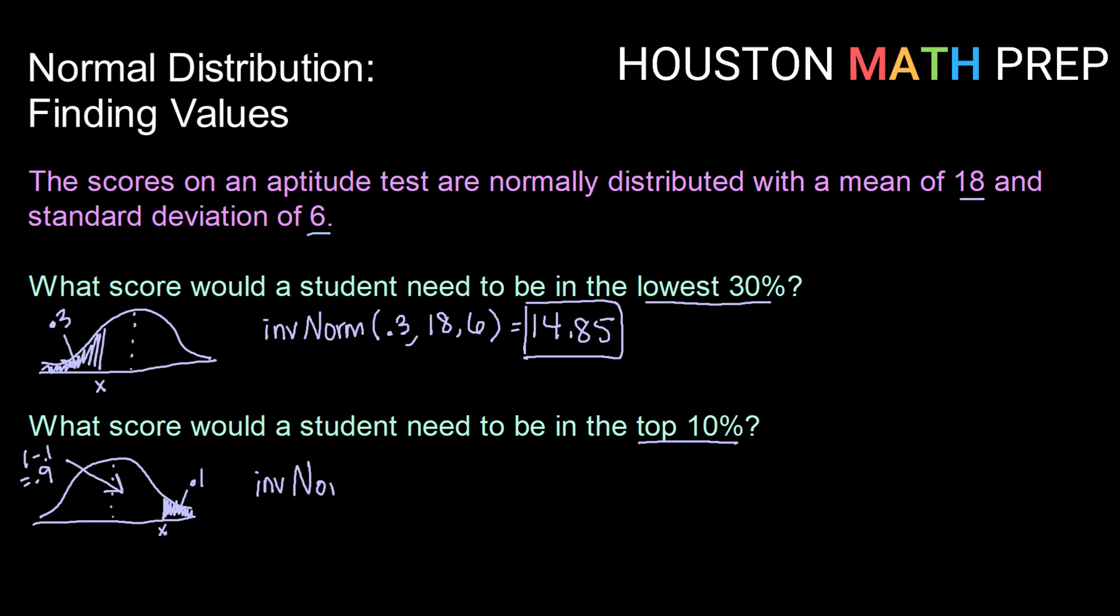So going in and grabbing our distribution inverse norm, again, we're going to feed it the area to the left, which would be 0.9, our mean of 18, and our standard deviation of 6.